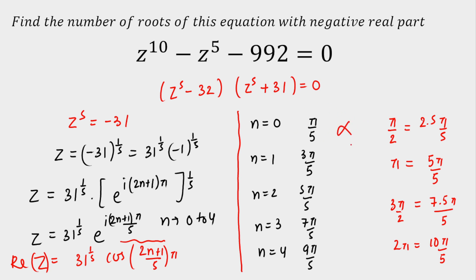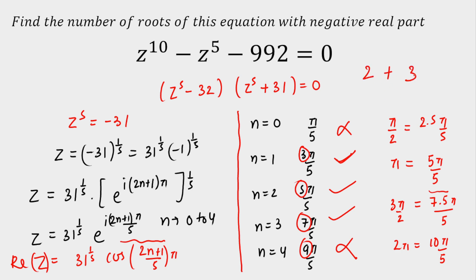Checking quadrants: n=0 (angle π/5 = 1π/5): since 1 < 2.5, first quadrant — rejected. n=1 (angle 3π/5): since 3 > 2.5, second quadrant — accepted. n=2 (angle 5π/5 = π): second quadrant boundary — accepted. n=3 (angle 7π/5): since 7 < 7.5, third quadrant — accepted. n=4 (angle 9π/5): since 9 > 7.5, fourth quadrant — rejected. So from z^5 = −31, there are 3 roots with negative real part. Combined with the 2 from the first case, the total answer is 5 roots with negative real part.